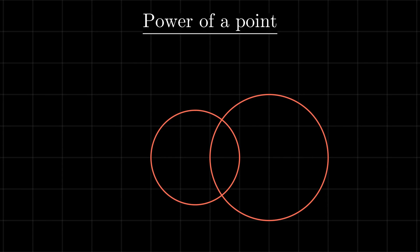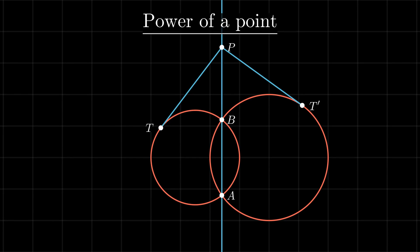This theorem enables us to find points whose power with respect to two given circles are the same — in other words, the set of points from which tangents of equal length can be drawn to two given circles. If the two circles intersect, any point on the line joining the intersection points will have the same power with respect to both circles. A line like this is called the radical axis of the two circles.